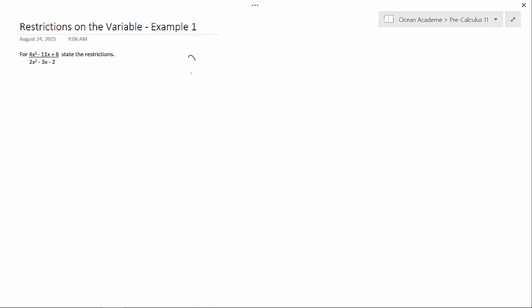So I'm just going to write the denominator here: 2x squared minus 3x minus 2. Now we need to determine our x, so we need to factor.